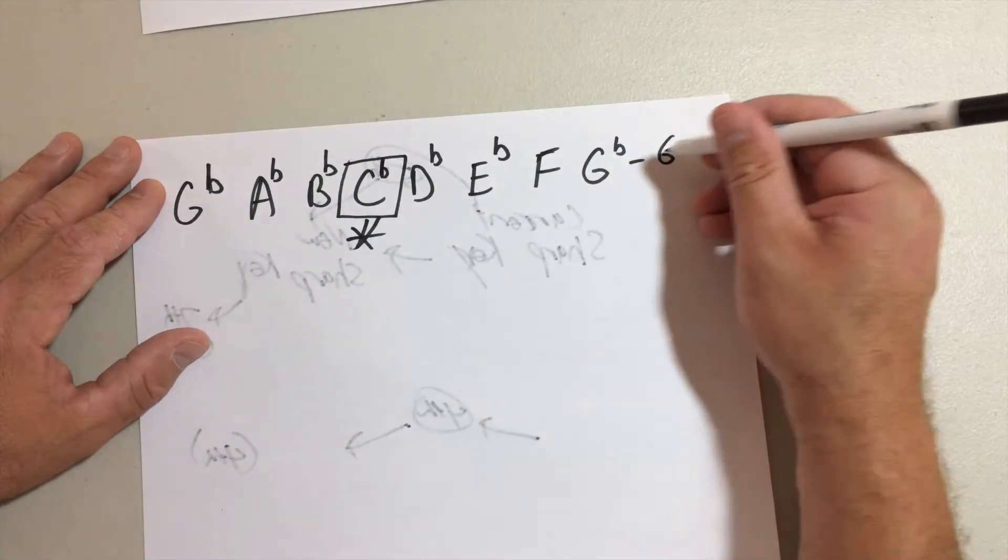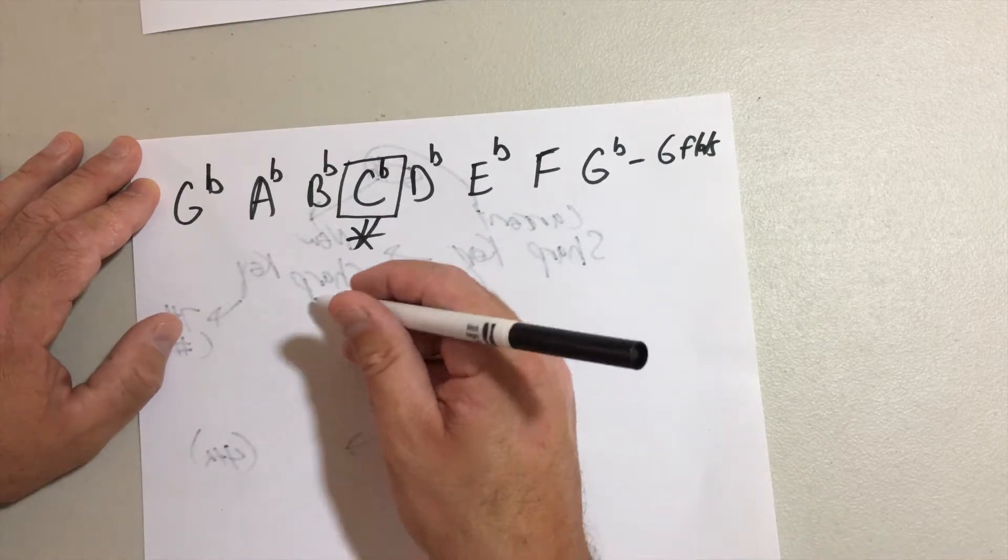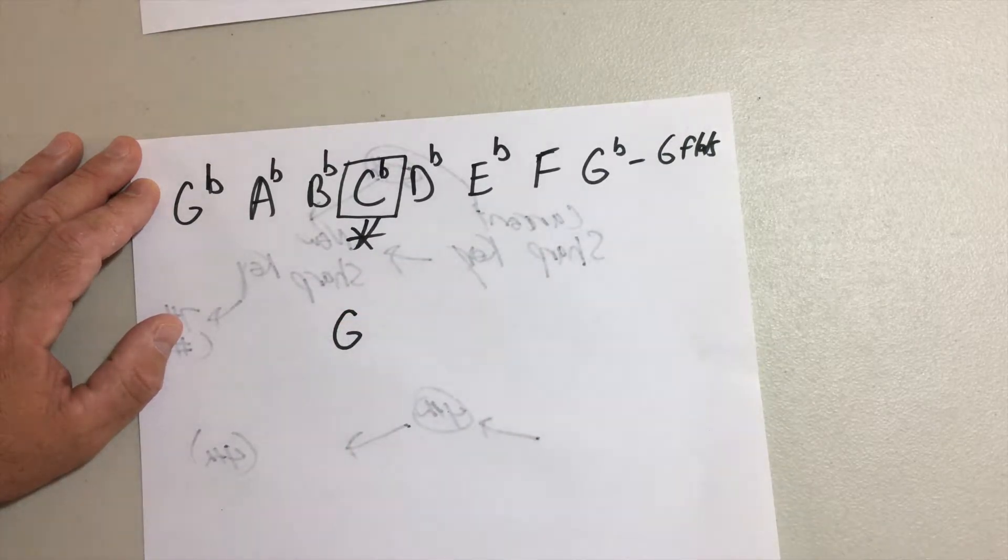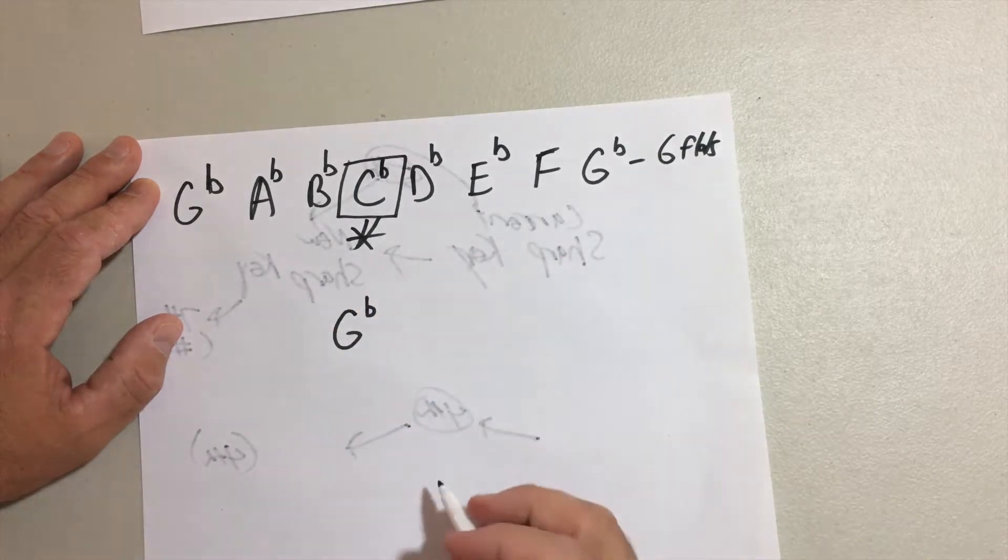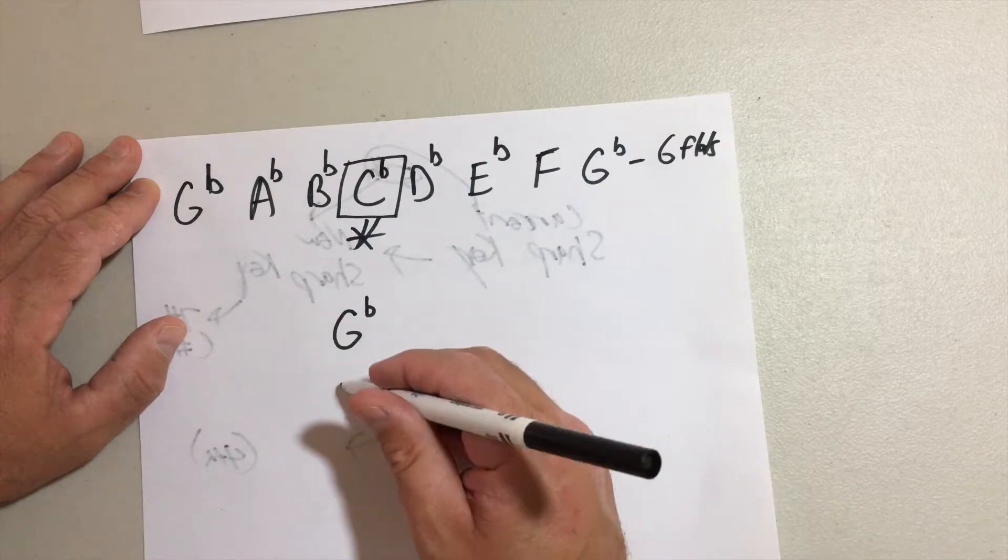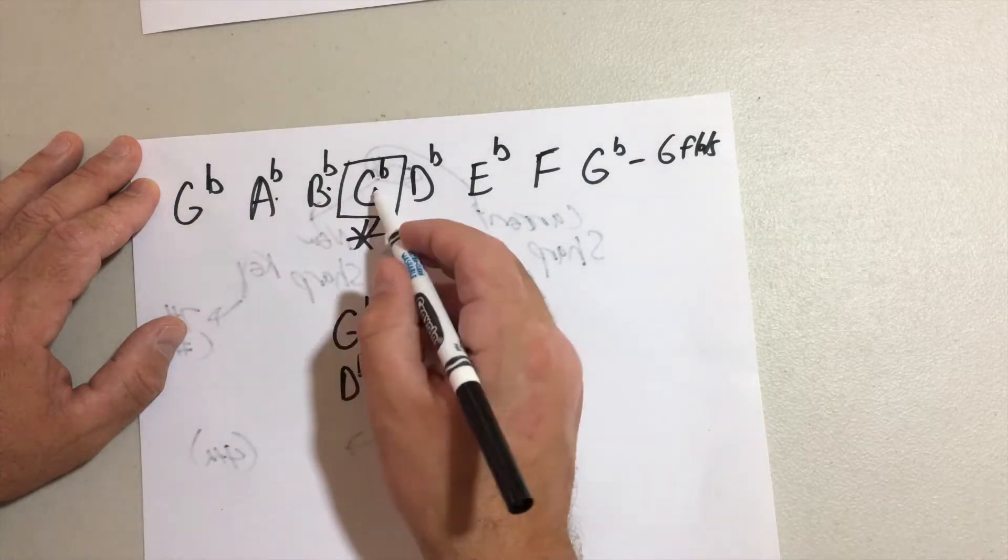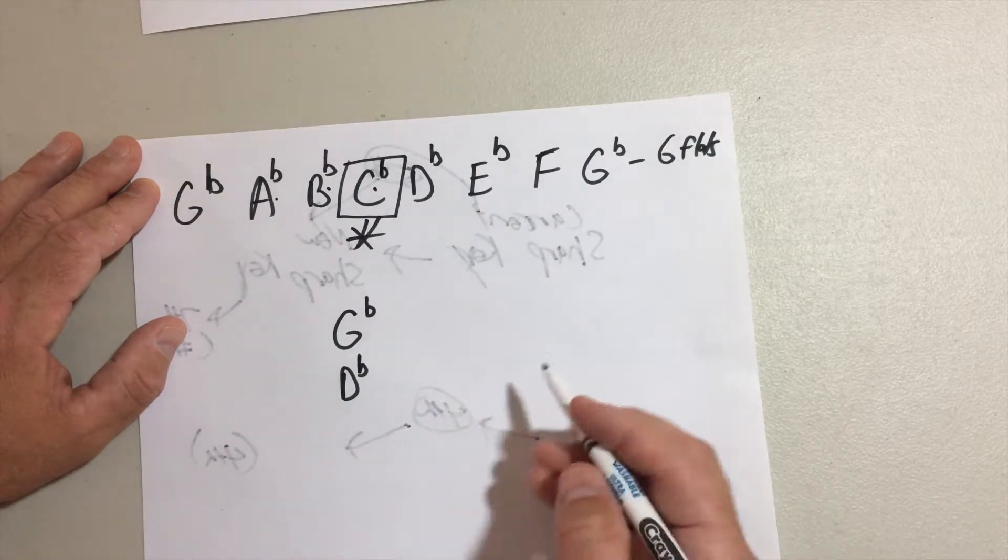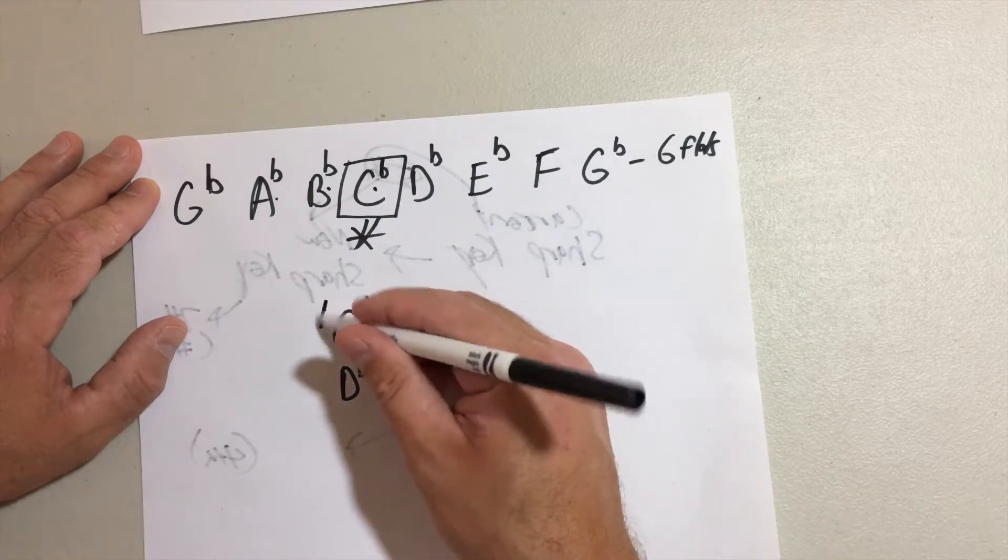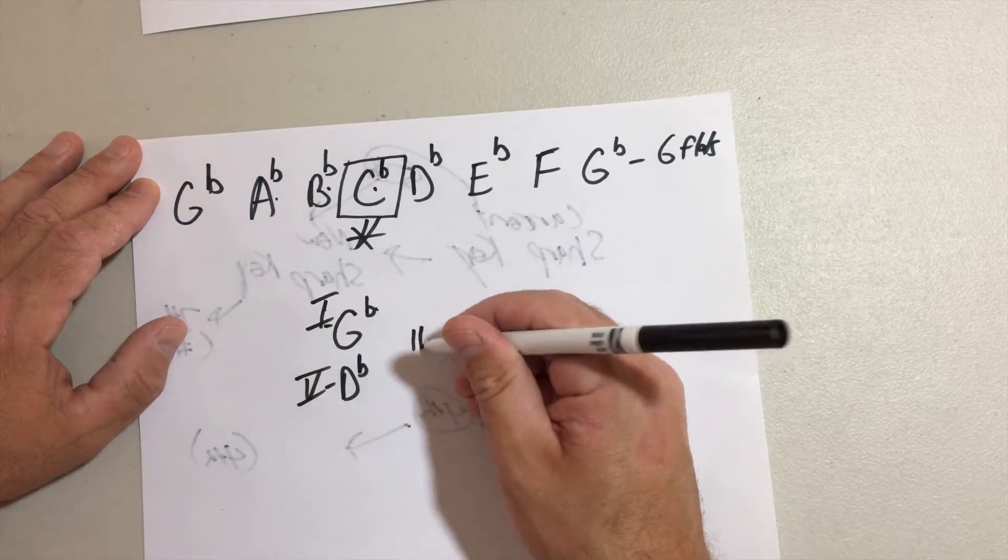And this key has six flats. So let's just write out the chords, because we already know the one, the four, and the five are major. So the G flat is the one, and the five is the D flat - I'm sorry, the D flat is the five. And then the four chord is gonna be C flat. These are all major chords.